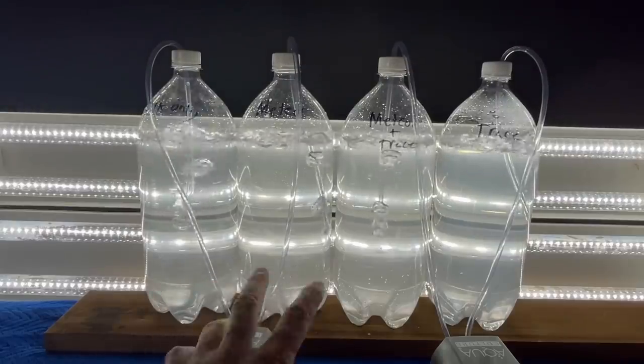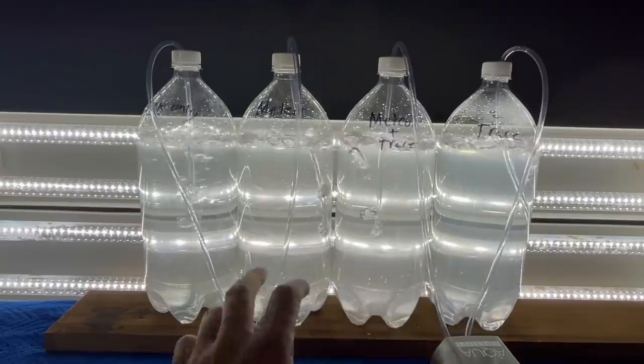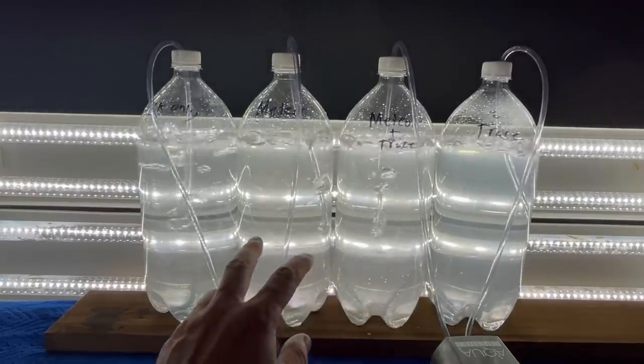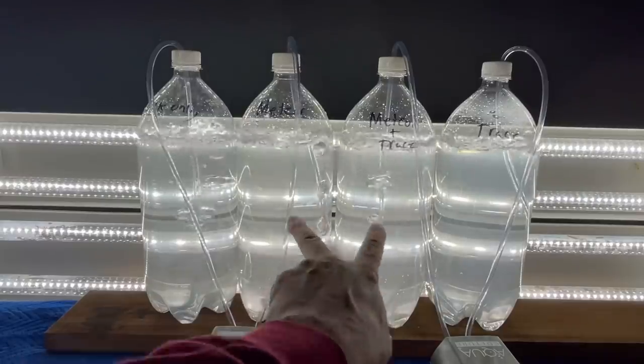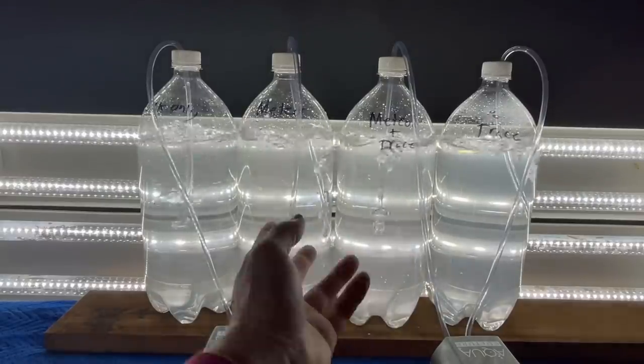If the meteorite dust is a good fertilizer, the last three of these will probably end up a bright green. If it's a poison, then the middle two should be less green. You guys get the idea.